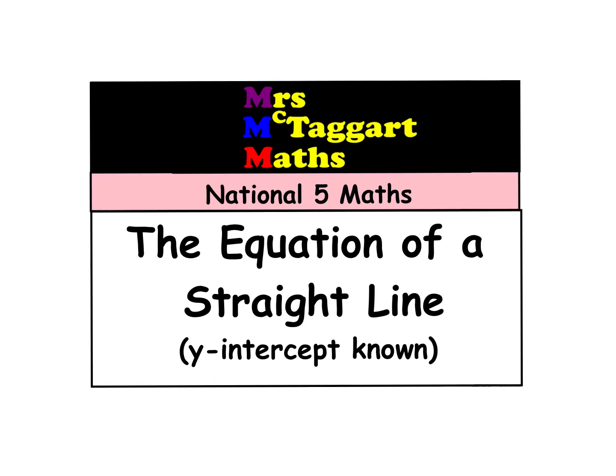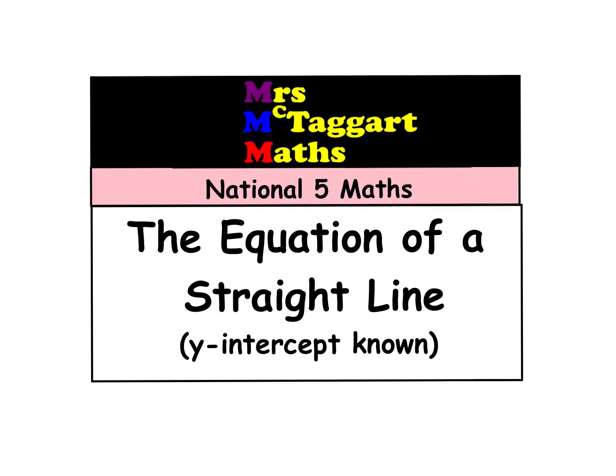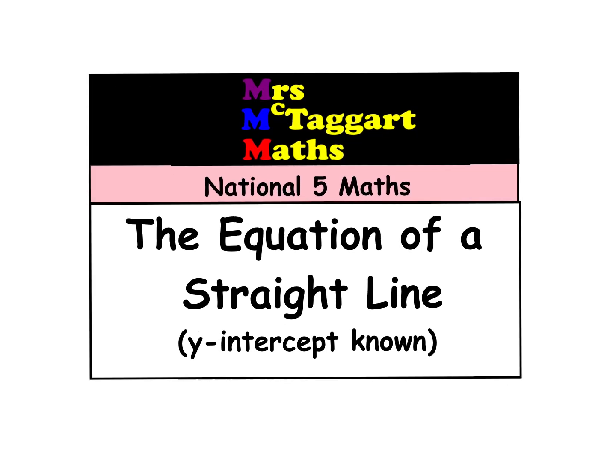Hi there, this is Mrs McTaggart and in this video we're going to look at the equation of a straight line formula. We're going to look at the first formula, one of two: the y equals mx plus c formula. My recommendation is that we use this one whenever the y-intercept is known to us. So the formula we're going to be using is y equals mx plus c, and I'll explain this a bit more in a couple of slides.